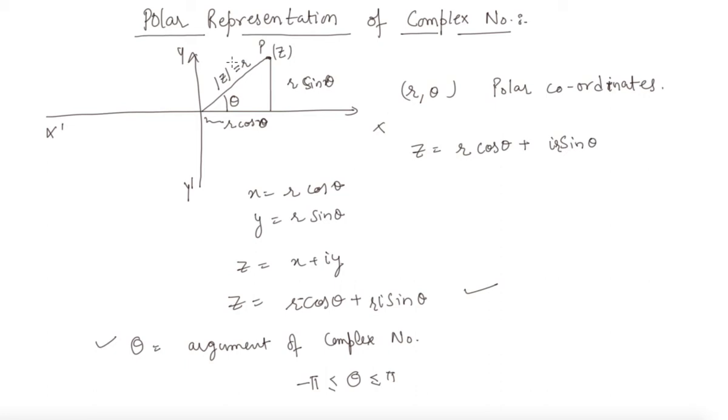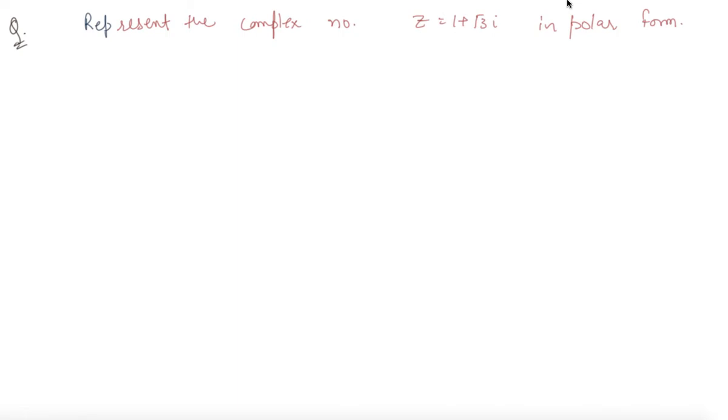Let us discuss one question based on this. The question here is represent the complex number z in polar form. As we know, the x part is r cos theta which is 1 here, and the y part is r sin theta which is root 3 here.